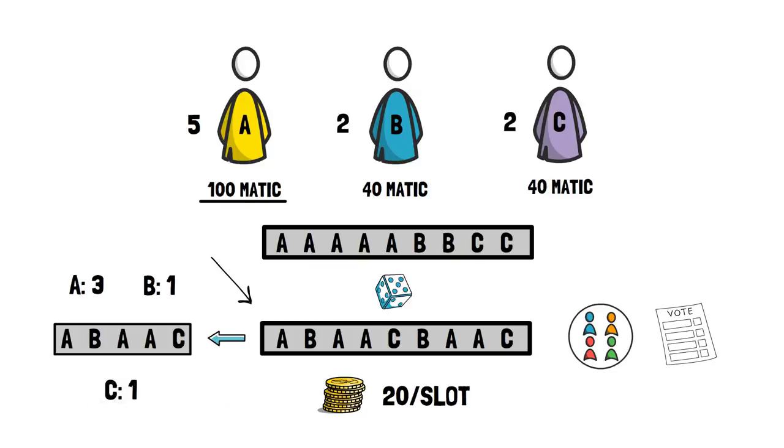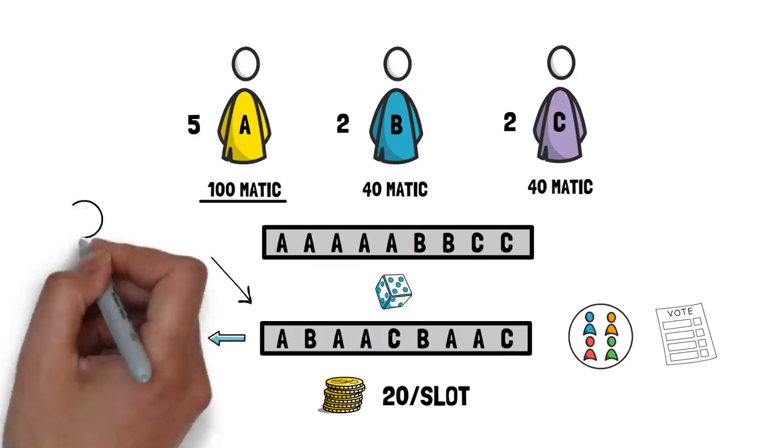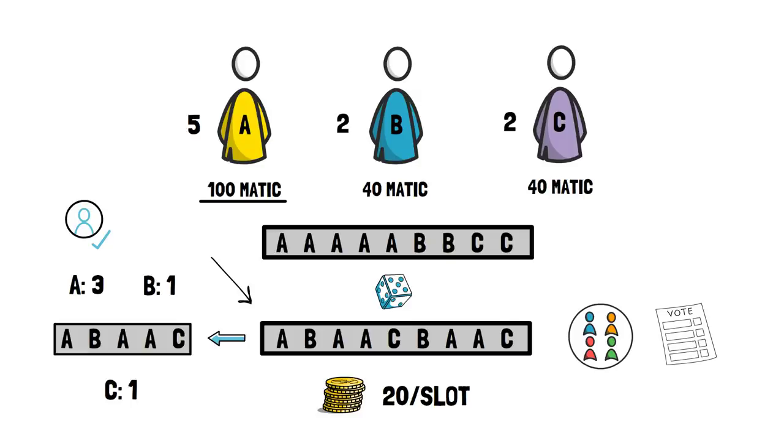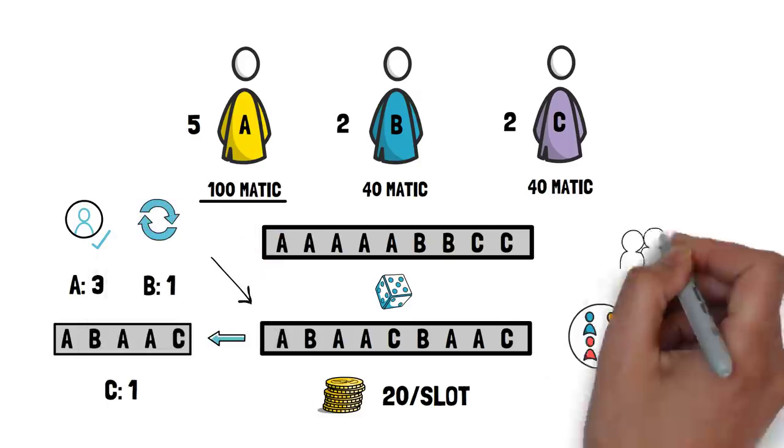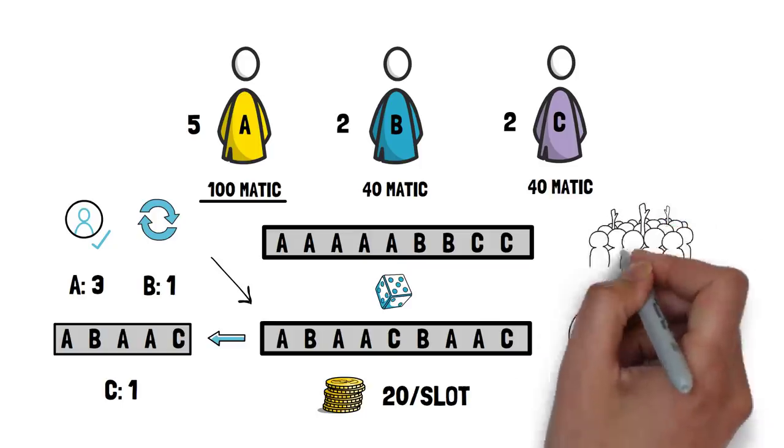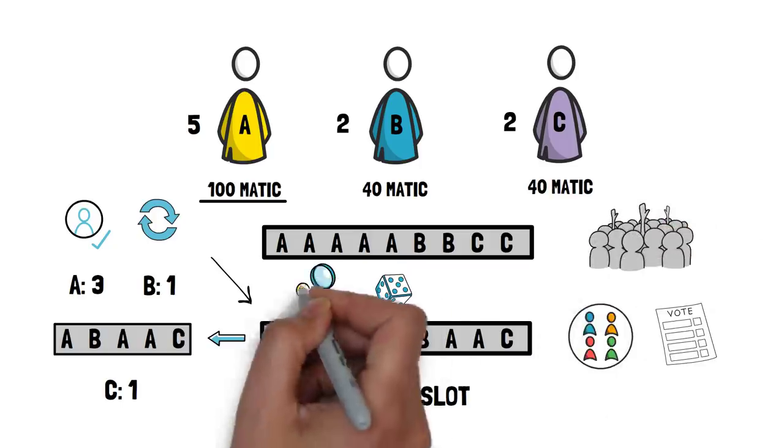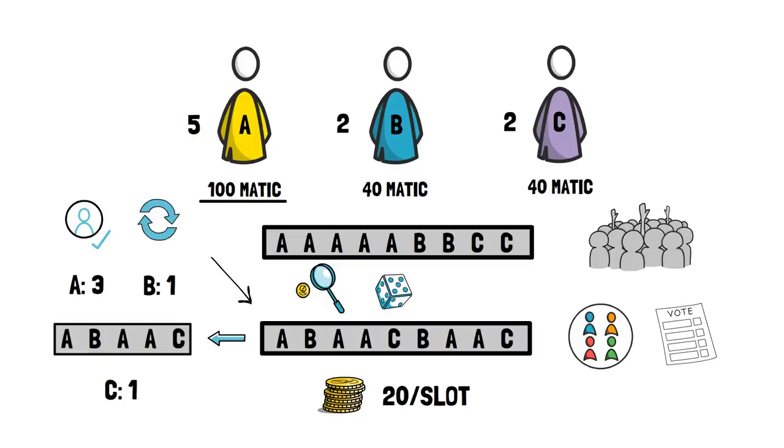Using this validator set and Tendermint's proposer selection algorithm, we choose a producer for every sprint on Bohr. This model allows anyone to participate in securing the network with any amount of MATIC tokens. It also doesn't sacrifice the speed of transactions, as not all validators have to validate blocks all the time.